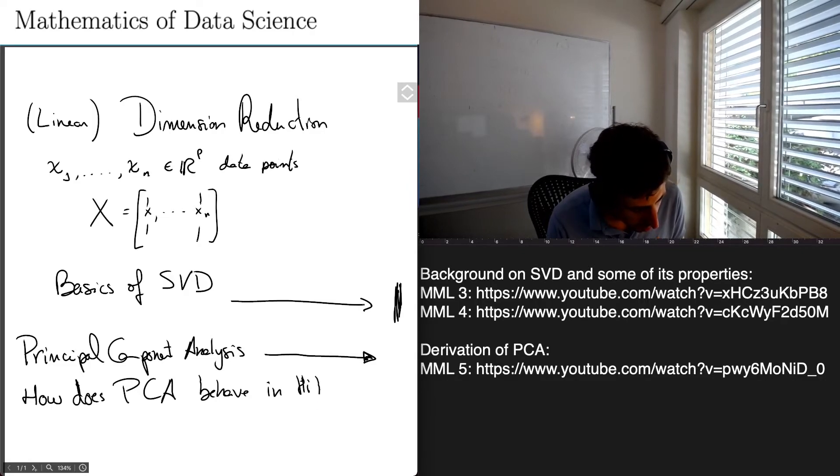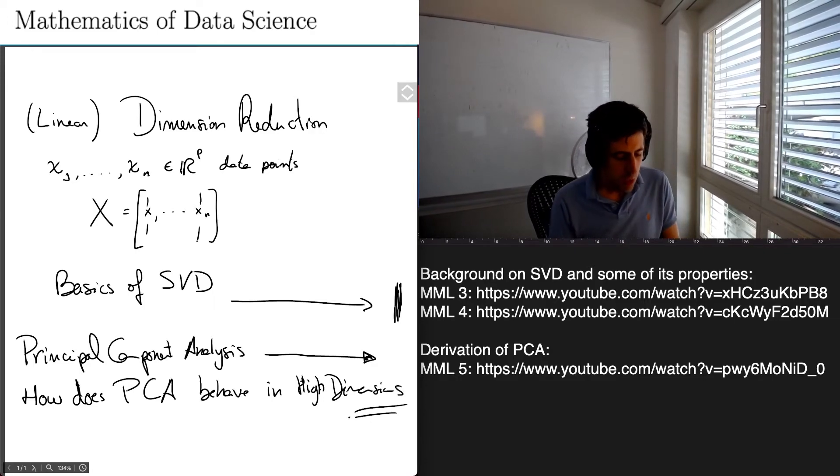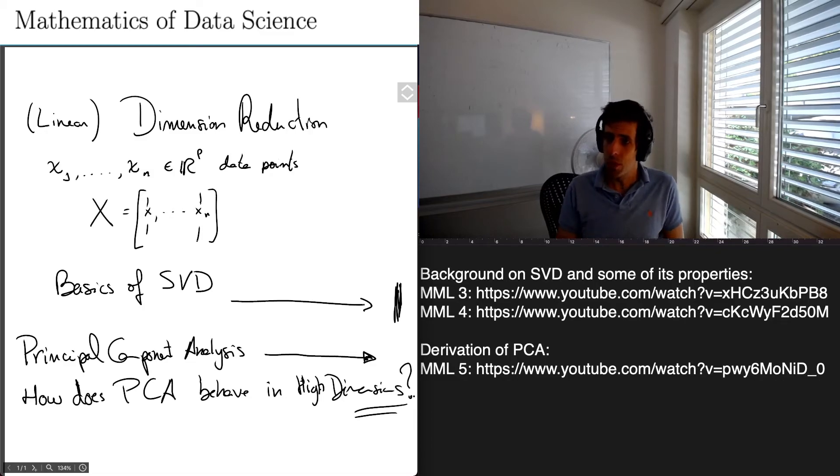And so we are going to think about taking points in very high dimensions. In particular, we're going to take random points in high dimensions. And we're going to ask ourselves, what would PCA do with these random points? And now, because the points are random, the resulting matrix is random. And PCA is something about eigenvalues and eigenvectors, so it's all going to be about understanding eigenvalues and eigenvectors of matrices with random entries.